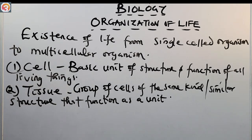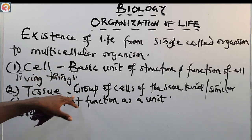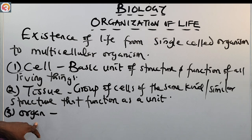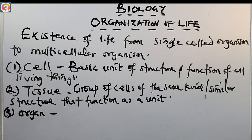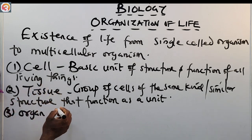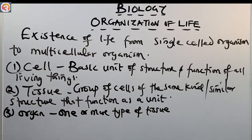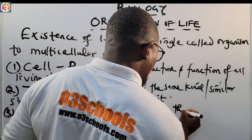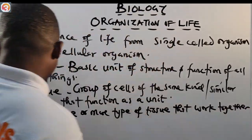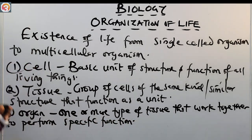The third level is the organ. An organ is composed of one or more types of tissue that work together to perform a specific function. So: tissue is composed of cells; organ is composed of tissues. One or more types of tissue work together to perform a specific function — that is the organ.